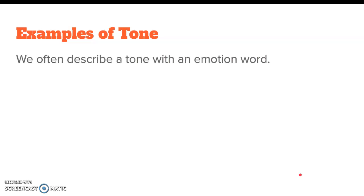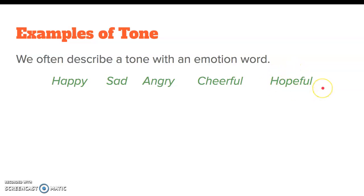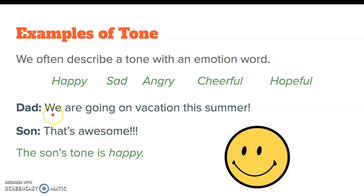We often describe tone with an emotion word — like happy, sad, angry, cheerful, or hopeful. For example, imagine a dad says: we are going on vacation this summer! And the son says: that's awesome!!! You can probably tell the tone here is happy, at least from the son. The dad has an exclamation mark and vacation is usually a good thing. But the son says awesome with three exclamation points — so from everything we can tell, the son seems very happy. That might seem obvious, but taking a look at these words can be important when things get more complex.